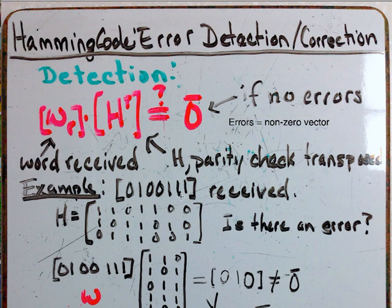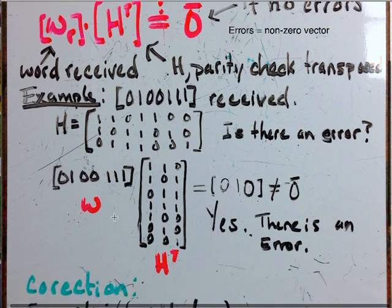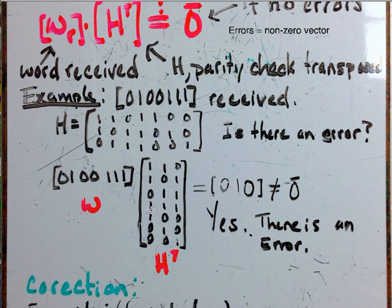So for example this is the code word we received and here's H, our parity check matrix. This is for the 7-4 Hamming code. And the question is, is there an error? Well we multiply the W, the word received, times the transposition of the parity check matrix H.